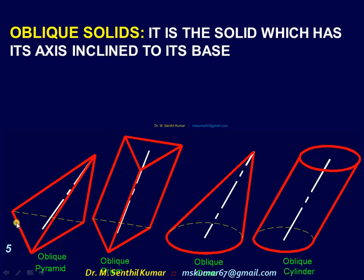This is the base. If you take the triangular pyramid or triangular prism, whatever it be, the axis is not perpendicular to the base. That is called an oblique solid — oblique triangular pyramid, oblique triangular prism, oblique cone, oblique cylinder. So this is about the oblique solid, but it is not in the syllabus. Kindly make a note of it.